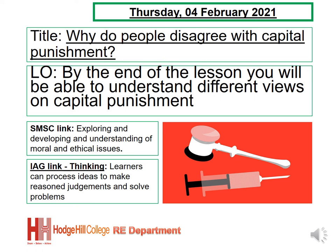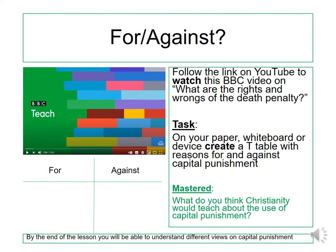Hi Yanine! Last lesson we looked at what capital punishment is and why it exists. In this lesson we are going to be looking at why people might disagree with capital punishment. By the end of the lesson you'll be able to understand different views on capital punishment. So why are people for and against capital punishment?